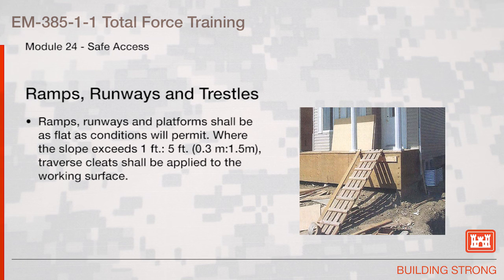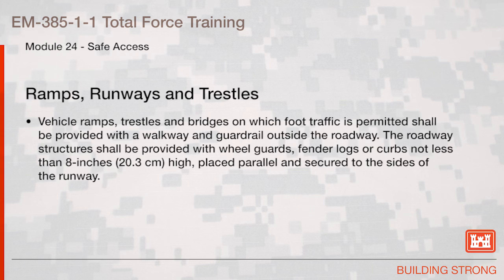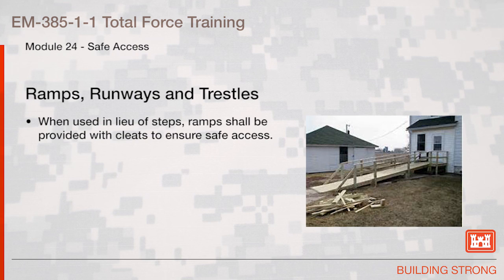Ramps, runways, and trestles: Ramps, runways, and platforms shall be as flat as conditions will permit. Where the slope exceeds one foot in five feet, traverse cleats shall be applied to the working surface. Vehicle ramps, trestles, and bridges on which foot traffic is permitted shall be provided with a walkway and guardrail outside the roadway. The roadway structures shall be provided with wheel guards, fender logs, or curbs not less than eight inches high, placed parallel and secured to the sides of the runway. When used in lieu of steps, ramps shall be provided with cleats to ensure safe access.